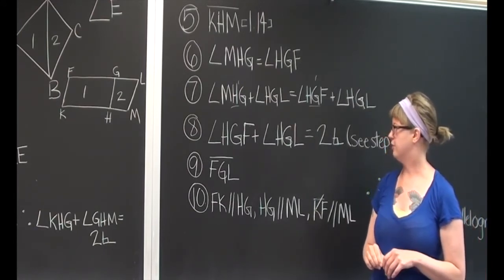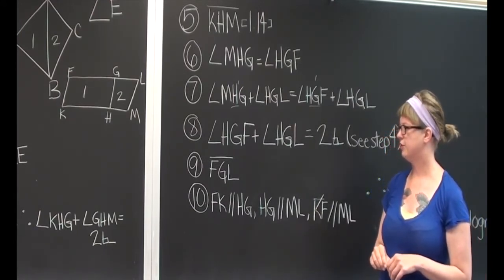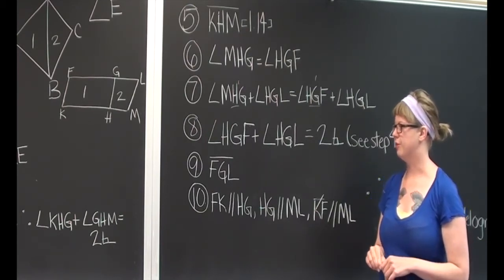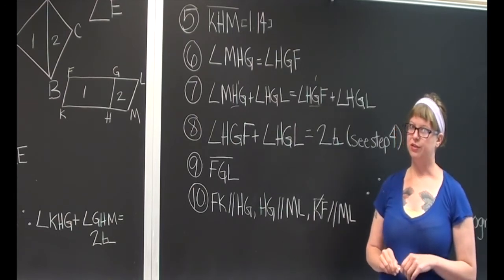And HGF plus HGL is equal to two right angles, using the same logic that we used in step 4. Now we know that the top of the parallelogram, FGL, is in a straight line.